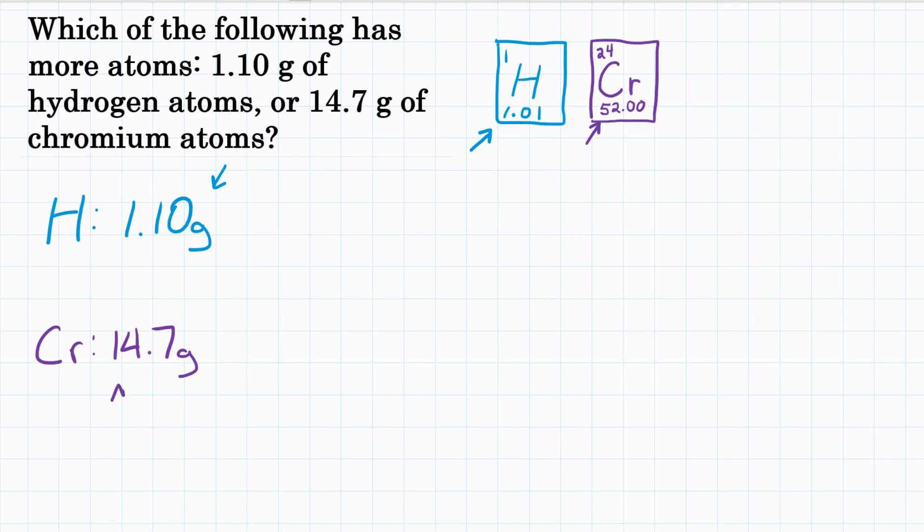We only have 14.7 grams of chromium. That's not even close to 52. So we don't have a mole of chromium. We don't have 6.02 times 10 to the 23rd atoms. We have a lot less.